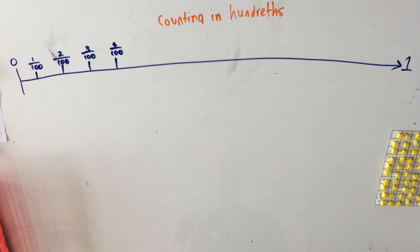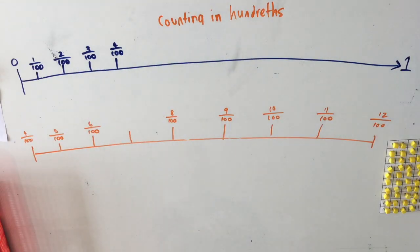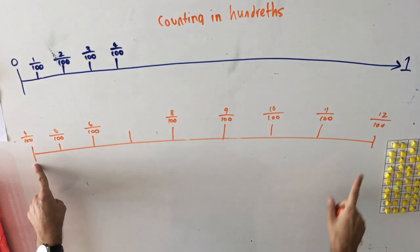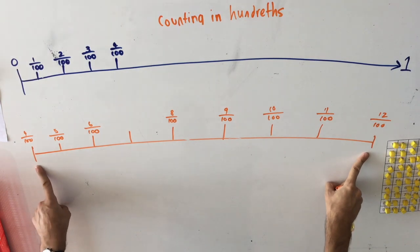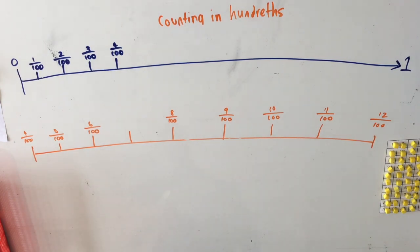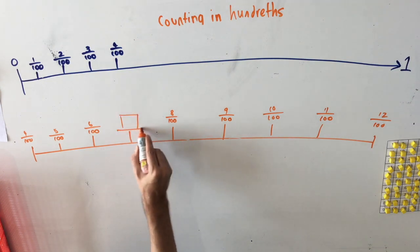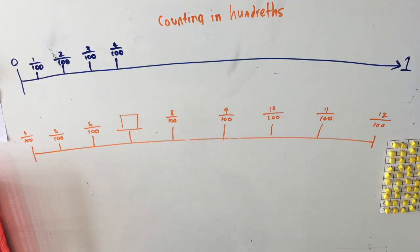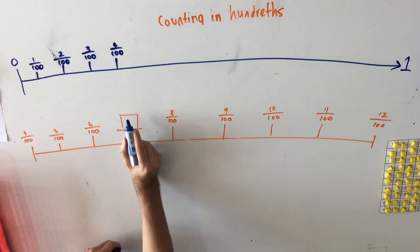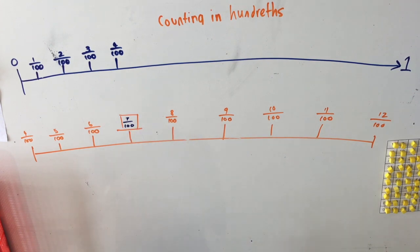I'm going to show you a few number lines now. See if you can work out which numbers are missing. Here you can see our first number line. You can see it starts at four one hundredths and finishes at twelve one hundredths, but what's the missing number? Hopefully you've seen that the space in the number line is here. It's between six one hundredths and eight one hundredths, which means that the answer must be seven one hundredths.